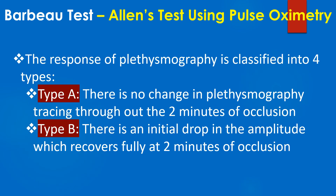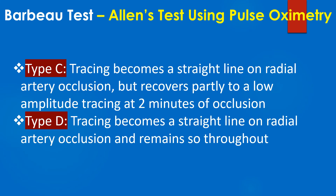The response of plethysmography is classified into four types. Type A: there is no change in plethysmography tracing throughout the 2 minutes of occlusion. Type B: there is an initial drop in amplitude which recovers fully at 2 minutes of occlusion. Type C: the tracing becomes a straight line on radial artery occlusion and remains so throughout.